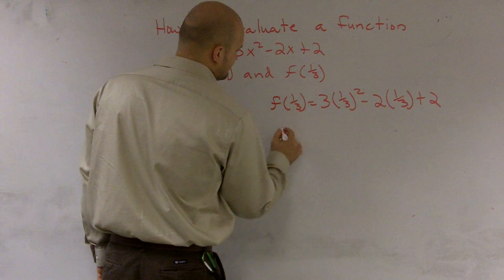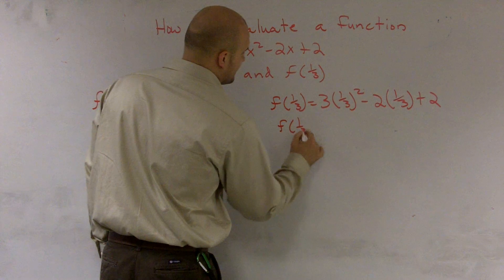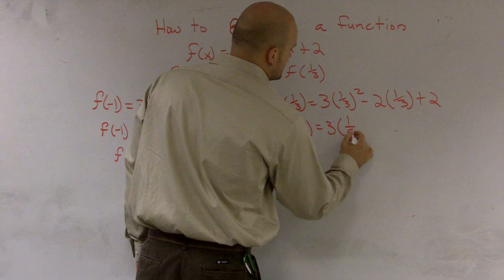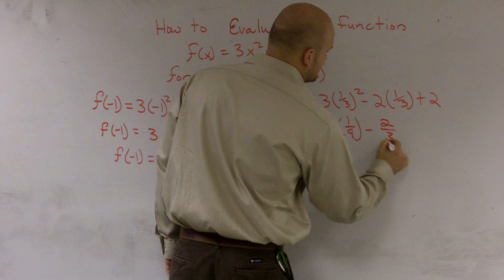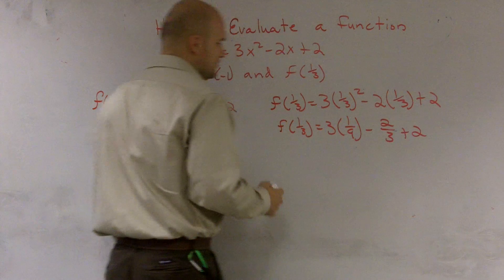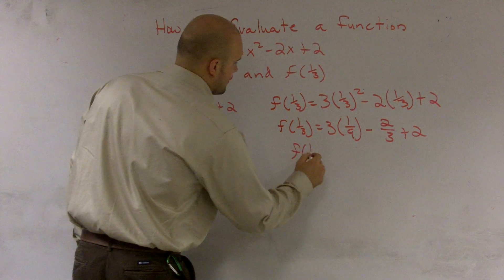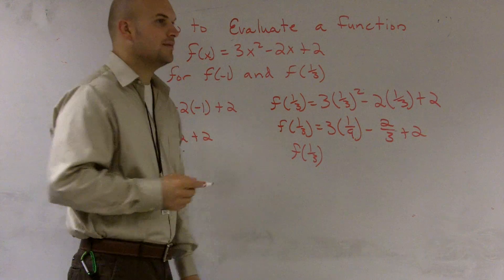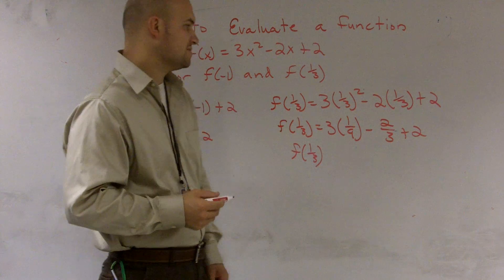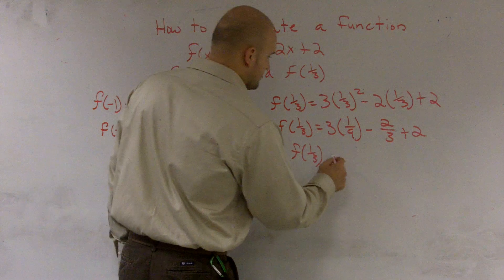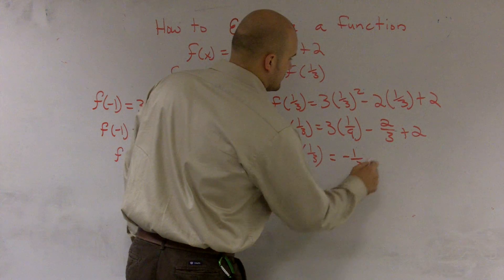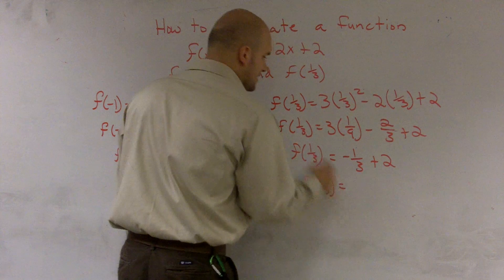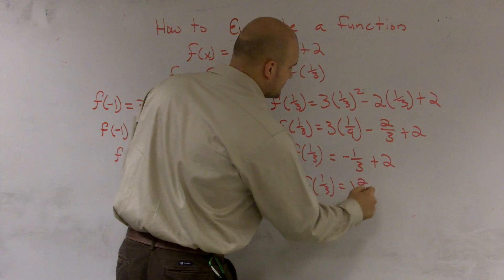So (1/3)² f(1/3) = 3 times (1/9) minus 2/3 plus 2. 3 times 1/9 is going to be 1/3 minus 2/3 will become negative 1/3 plus 2. f(1/3) = 1 and 2/3.